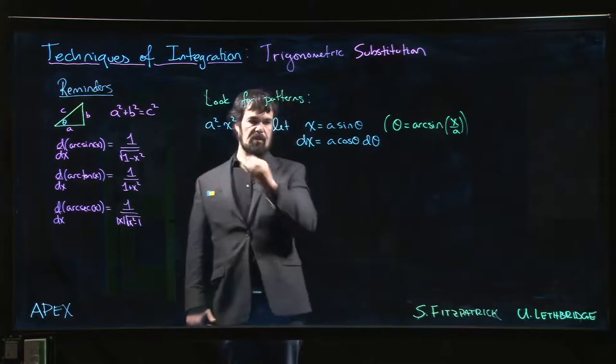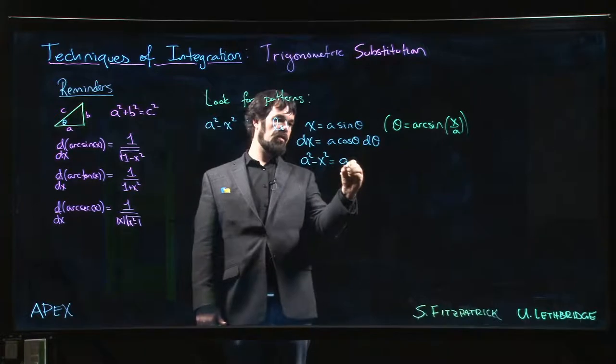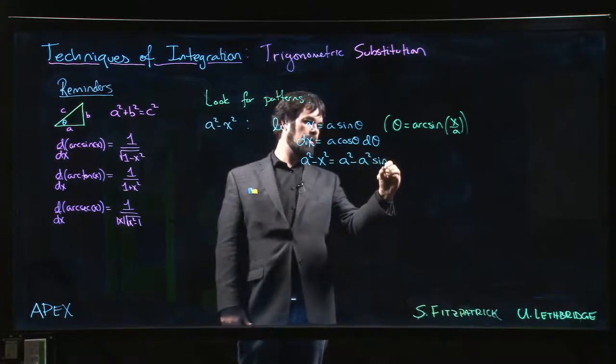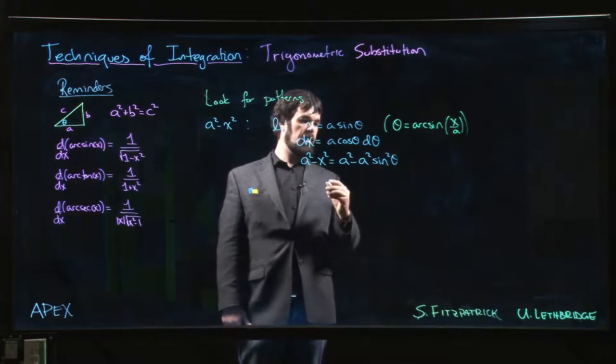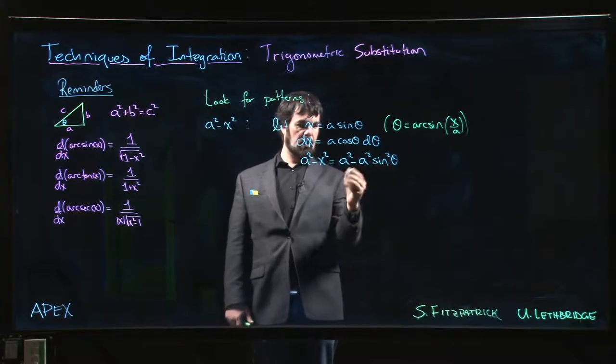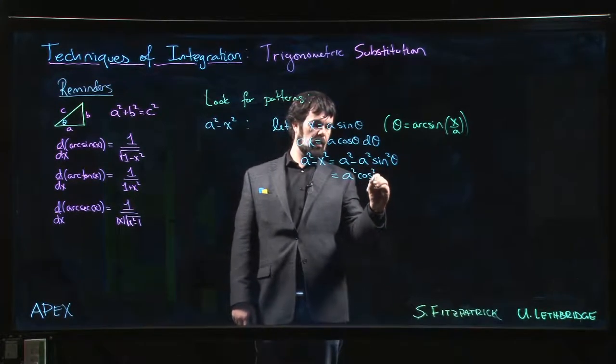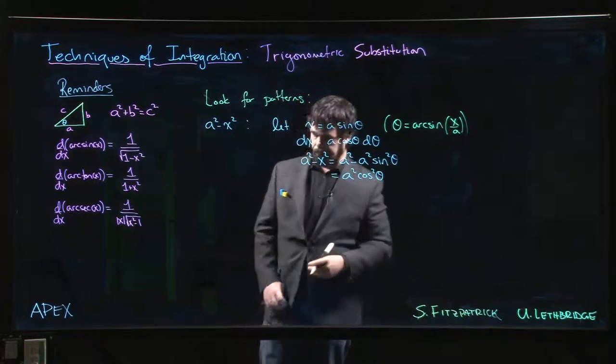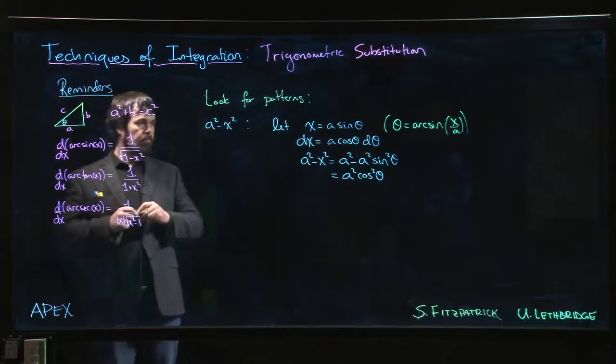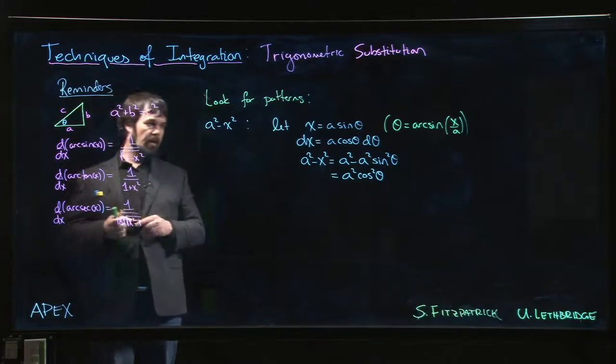But the other thing that happens is that a squared minus x squared becomes a squared minus a squared sine squared theta. And if you factor out the a squared, then there's 1 minus sin squared left over, which is cos squared. So we get a squared cos squared theta.